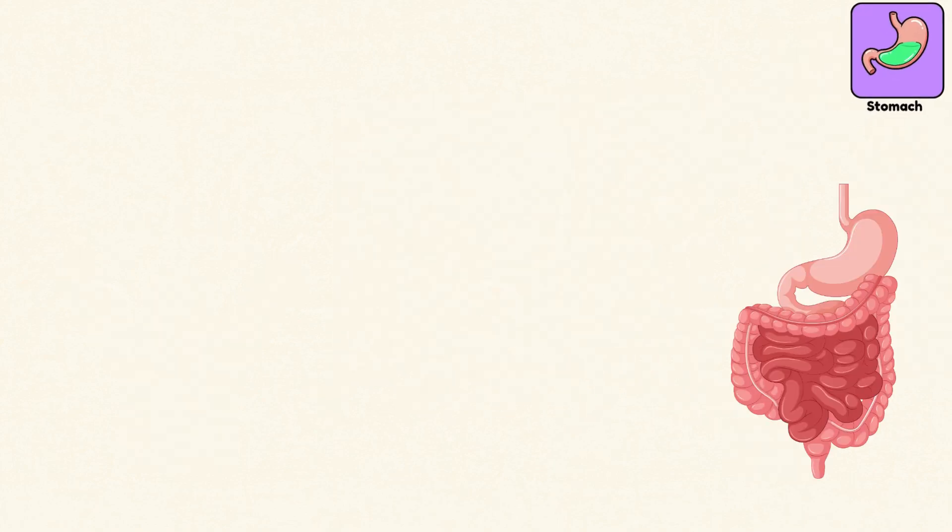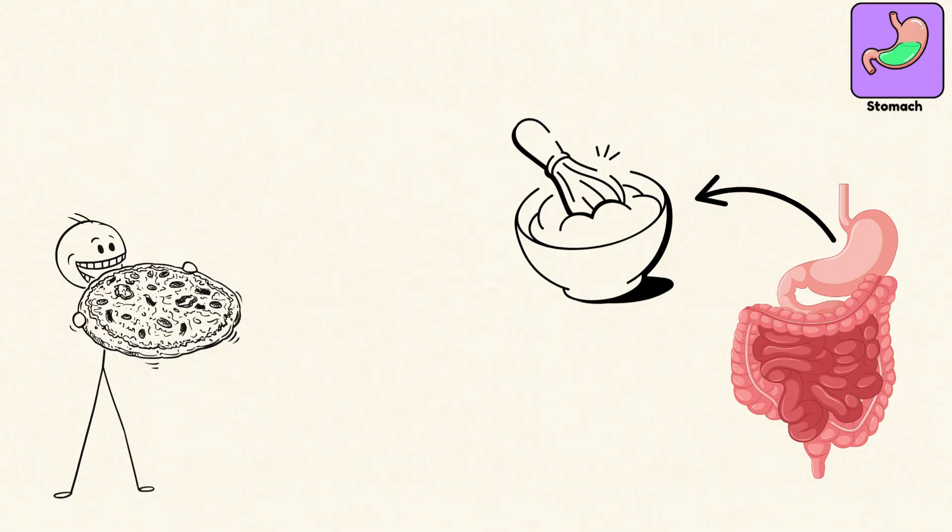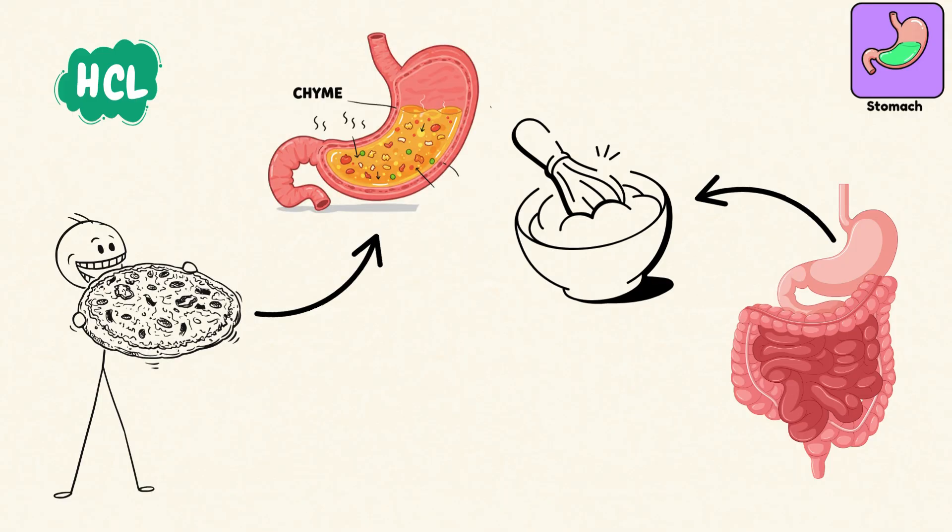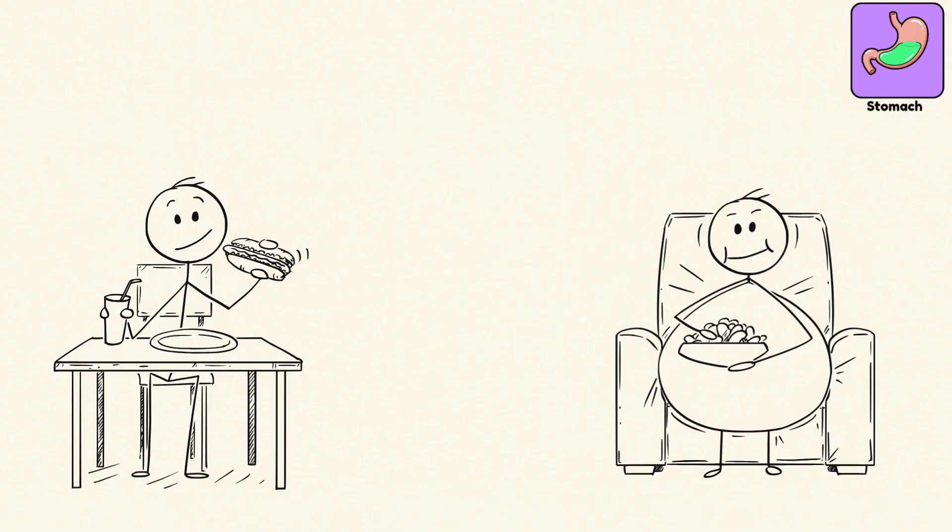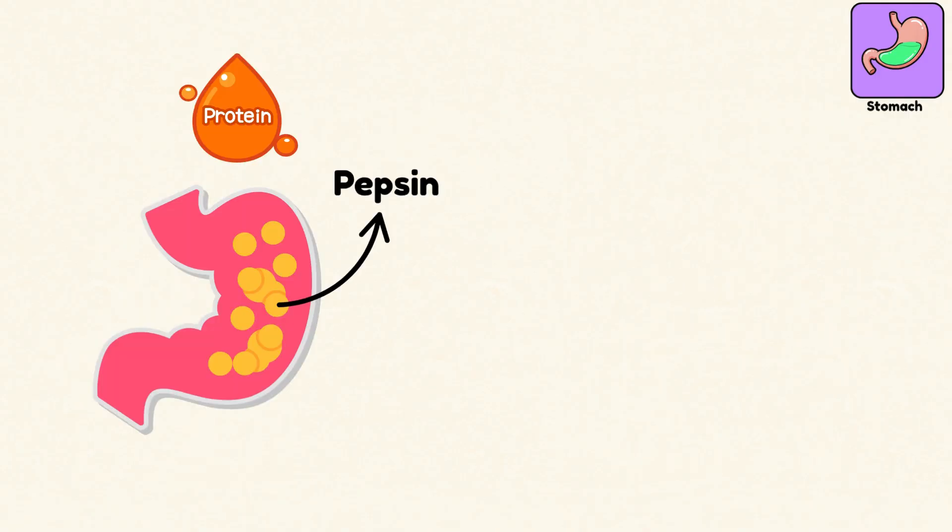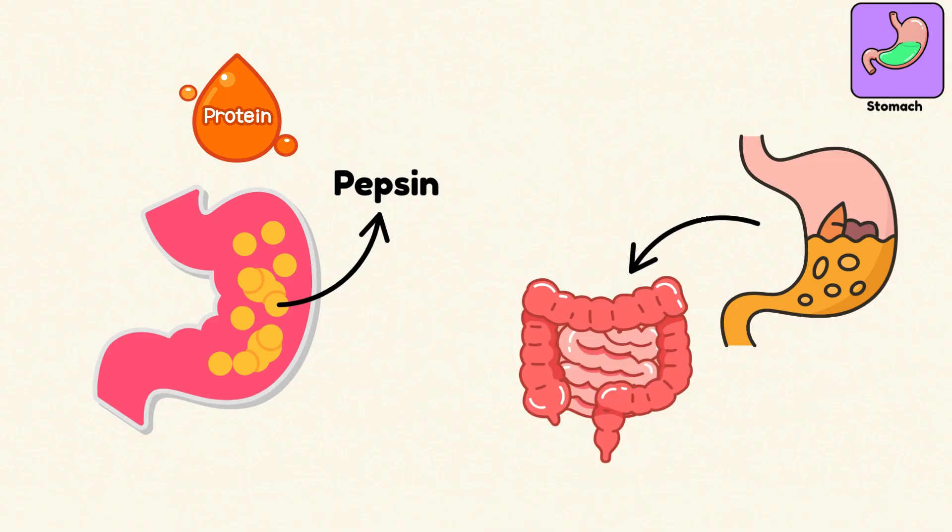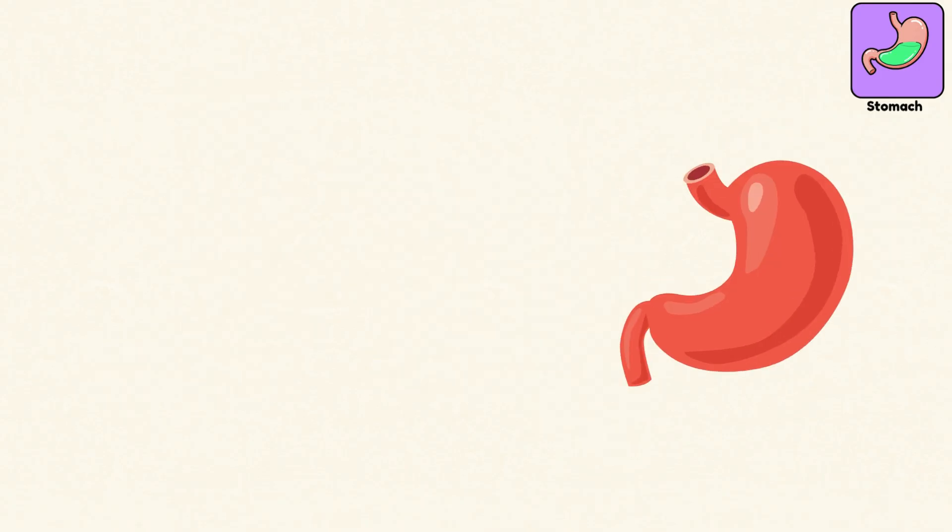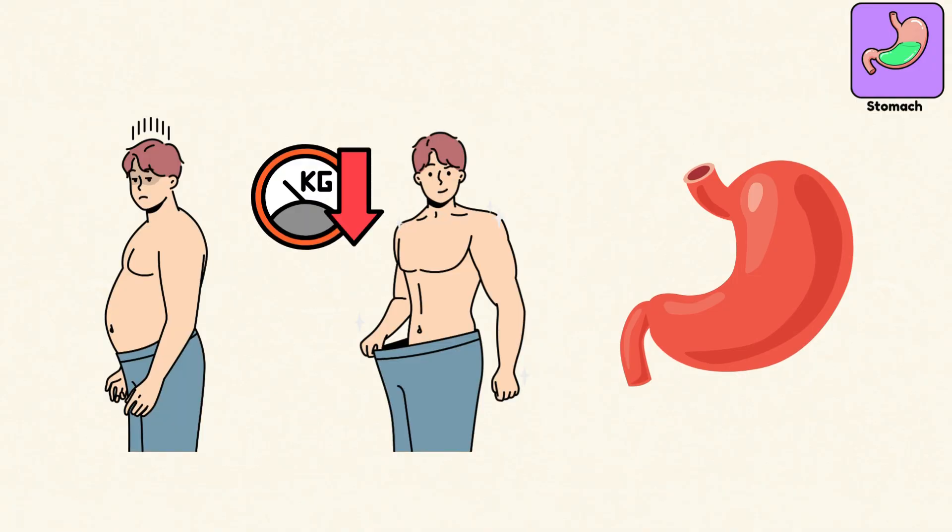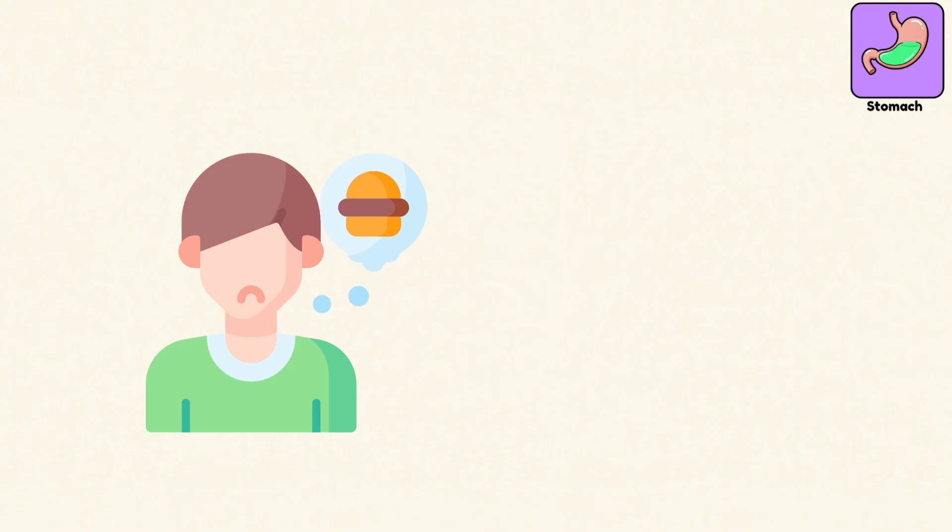Stomach. The stomach is your internal mixing bowl, mashing food into a liquid called chyme using powerful acids and enzymes. It stretches and contracts based on how much you eat. Proteins get broken down here by pepsin, and the churned-up mess is sent to the intestines for absorption. Fun fact: your stomach expands when you eat a lot, but even after losing weight, the size doesn't fully shrink. Appetite is more complex than just stomach space.